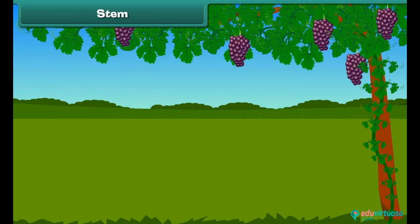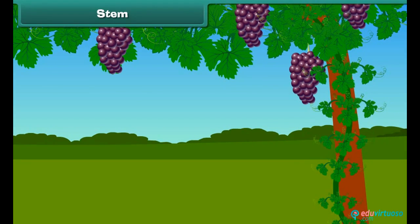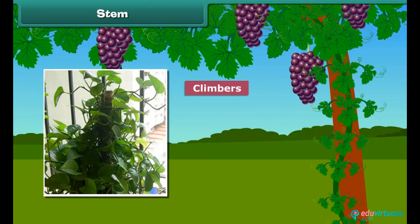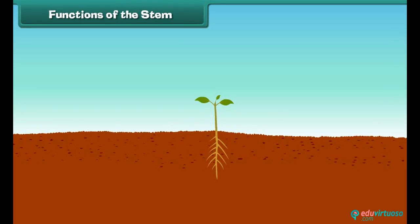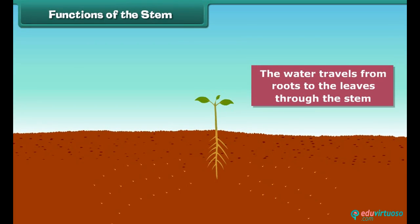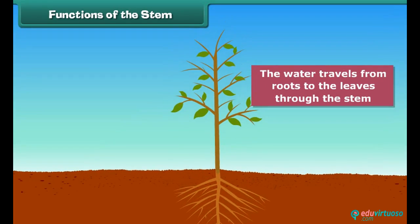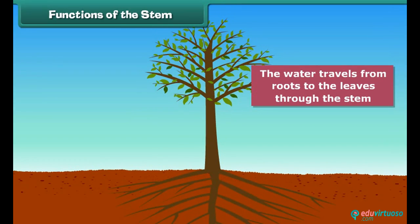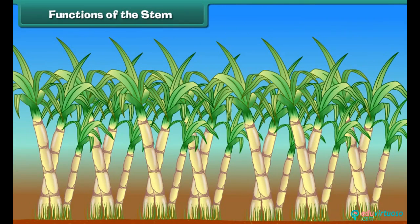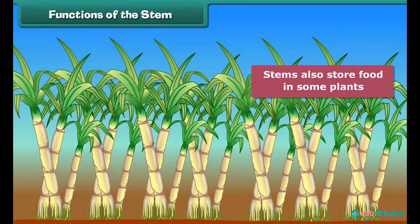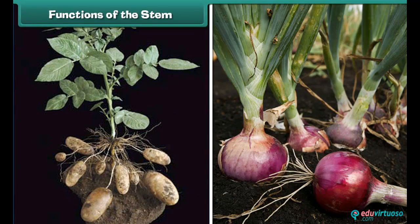In some plants, the stems are so weak that they cannot hold the plant upright. Such plants climb with the help of a support, so they are called climbers. Money plant is the best example of this kind. The water taken in by the roots travels to the leaves through the stem and is used by the leaves to make food. The stem also carries food made by leaves to all parts of the plant. Sometimes food is stored in the stem, as in sugar cane, potato and onion, and we eat these stems to get nutrition.